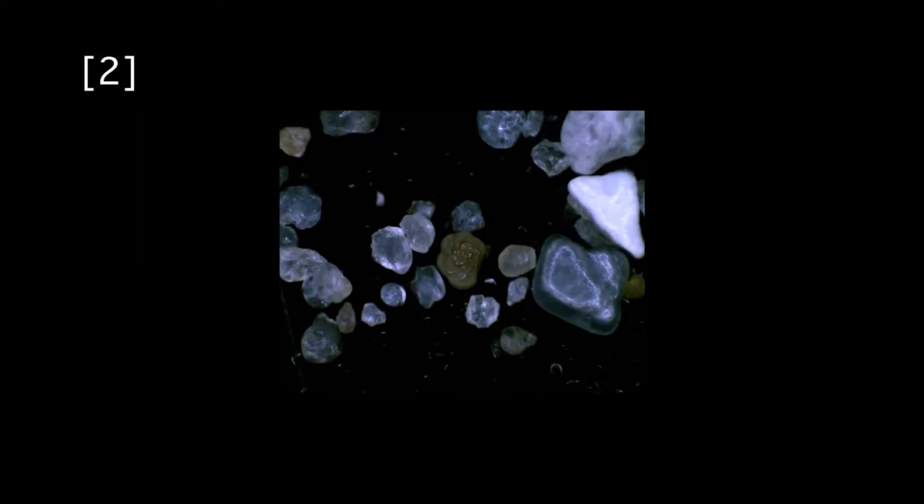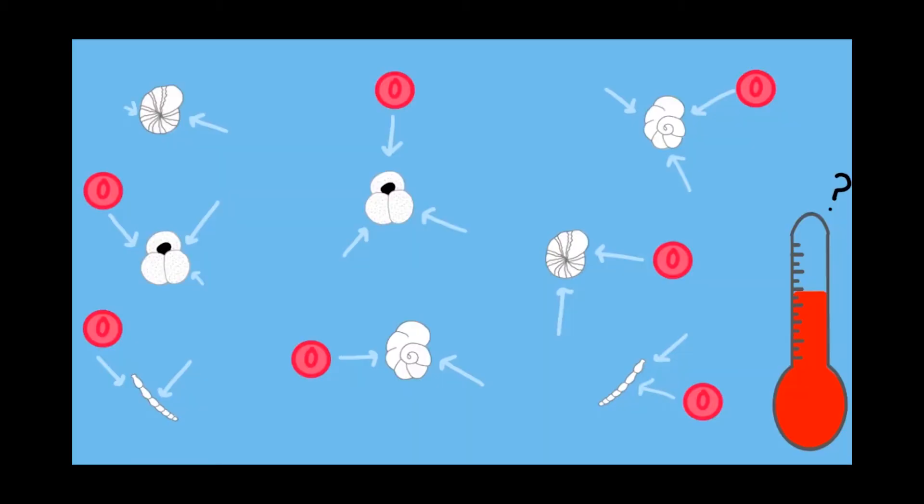By studying the foraminifera fossils, we can figure out what the ocean was like in the past. By looking at the chemistry of their shells, we can figure out what the temperature was when they were alive, as well as what the chemistry of the ocean was like too.